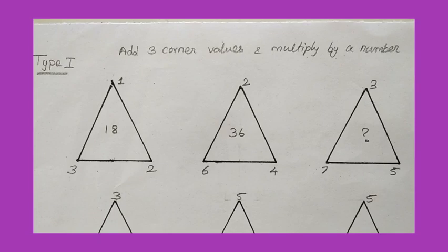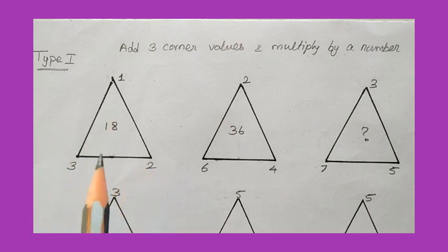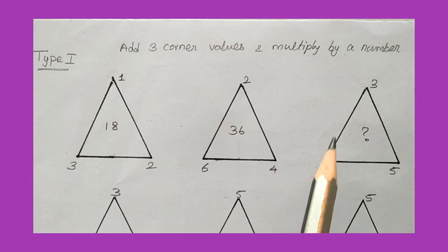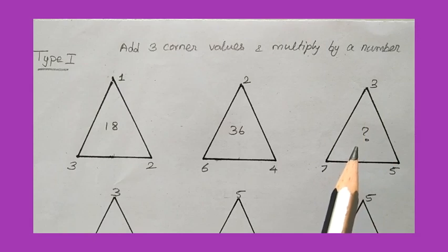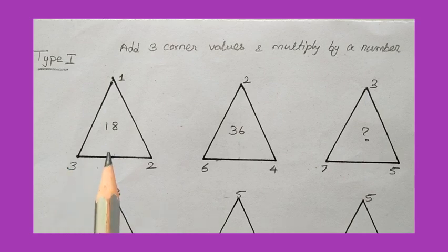Hi friends, today we are going to discuss finding the missing numbers. In the objective type they may give a diagram of three triangles — every triangle has three values in the corners and one value in the middle. Either the corner values can be asked with the other three given, or all corner values are given and they ask for the inside value. There are some types of problems where the relationship between the inside value and the outside corner values involves multiples, division, or averages.